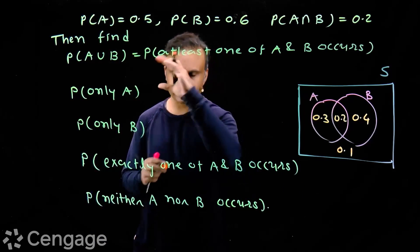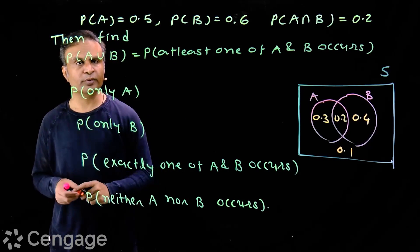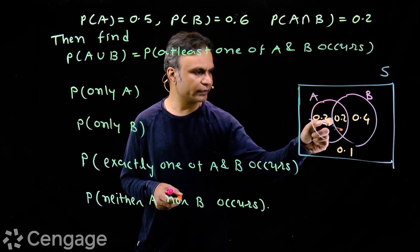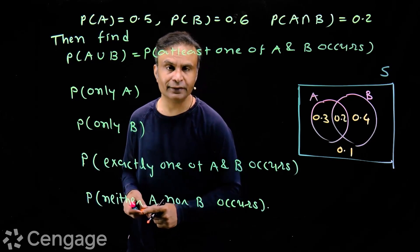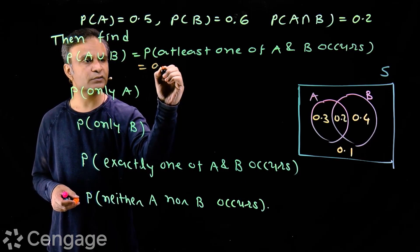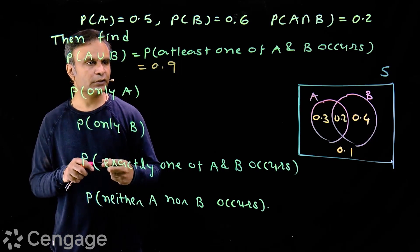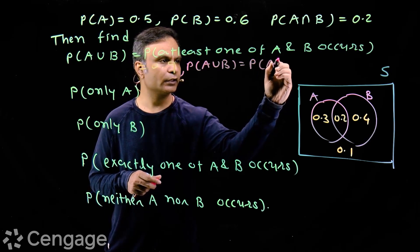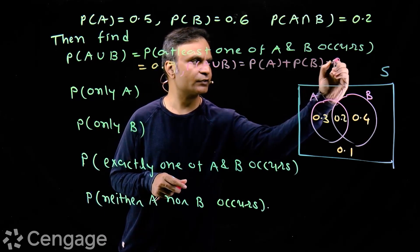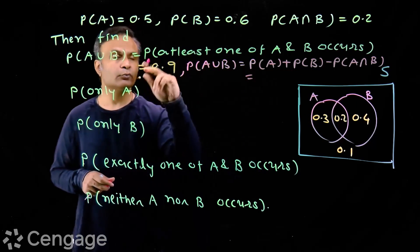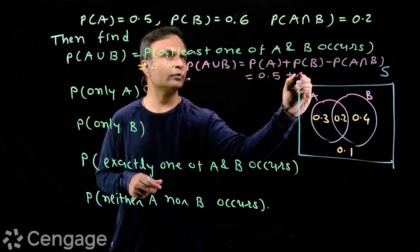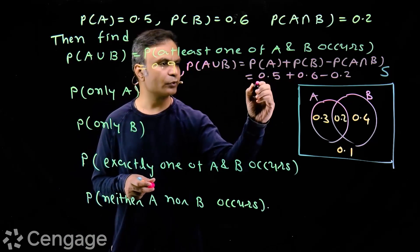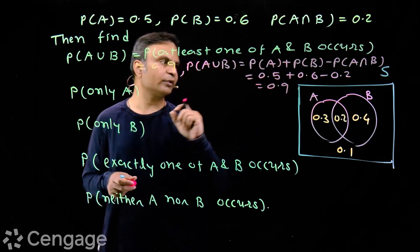Using this Venn diagram we can answer questions easily. For probability of A union B: the region of A union B contains values 0.3, 0.2, and 0.4, and their sum is 0.9. We can also use the formula: P(A∪B) = P(A) + P(B) − P(A∩B) = 0.5 + 0.6 − 0.2 = 0.9.